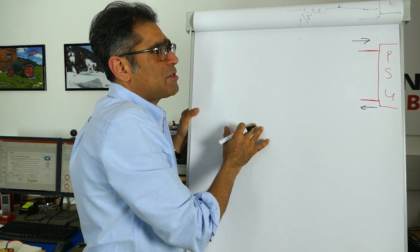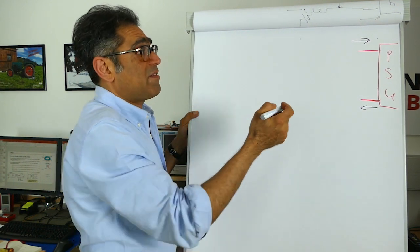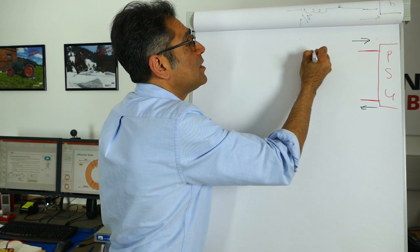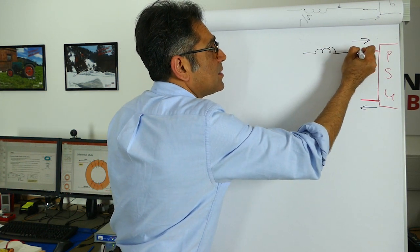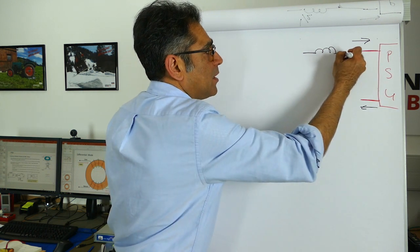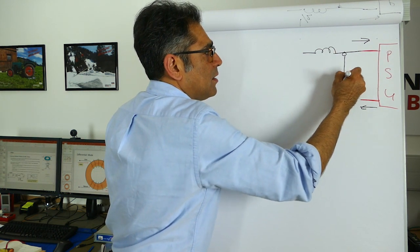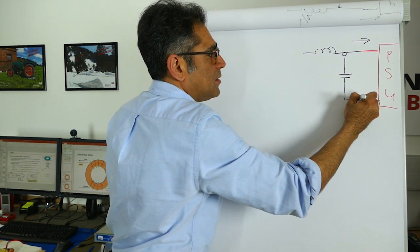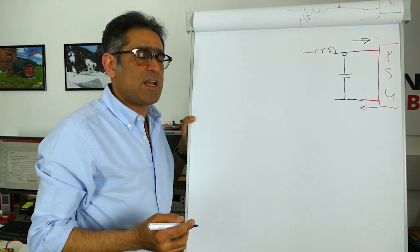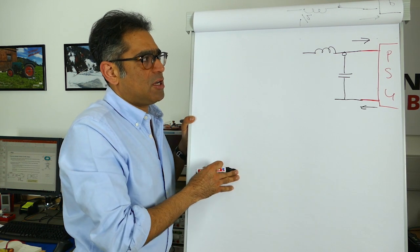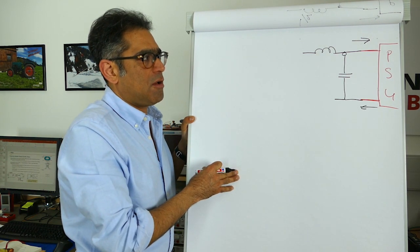So in order for us to filter this, the most common way in fact is a very simple LC filter. So you have got an inductor here connected to there and then you have got a capacitor here connected to there. Now that forms a very simple LC filter which filters out our differential mode noise.